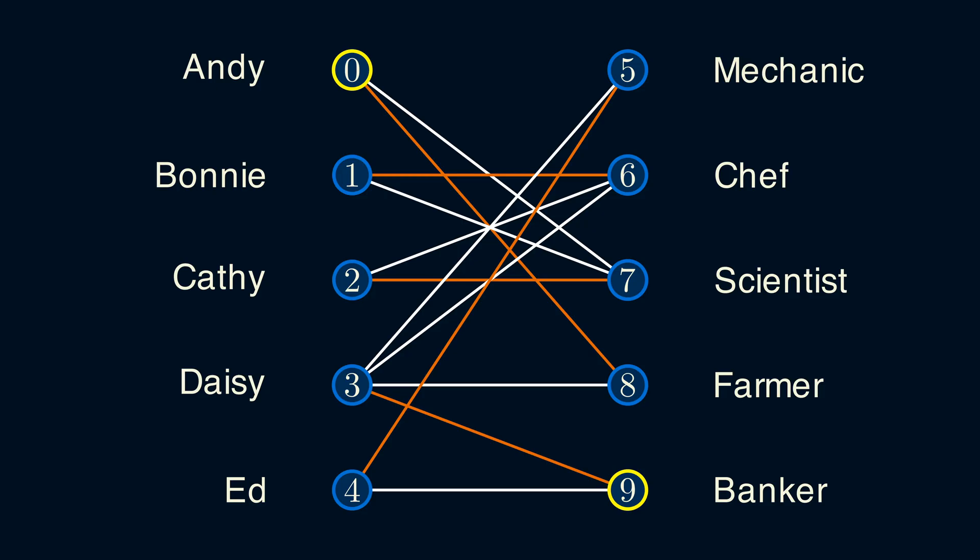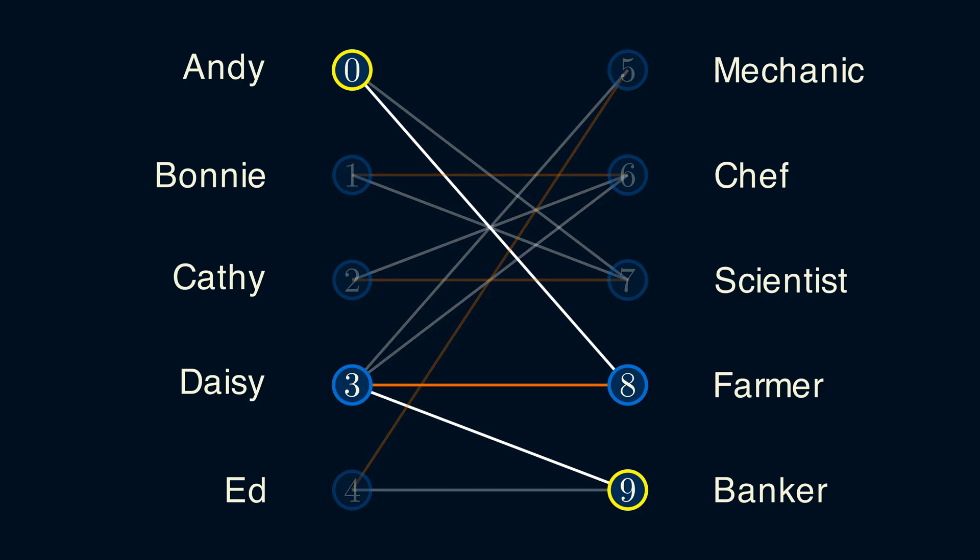Wait, so now everyone has a job? By making some clever swaps, we can increase the size of our matching. This was the original matching. What happened is that the edges along this path swapped from not being in the matching to being in the matching, and vice versa.